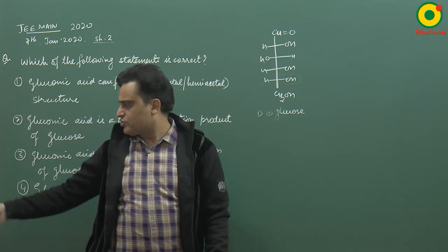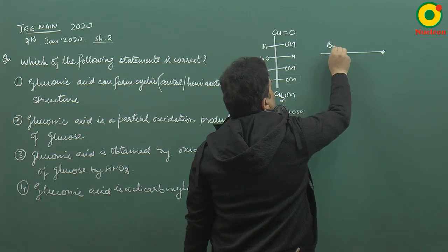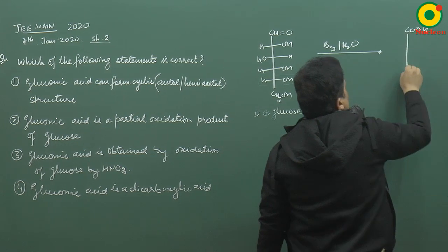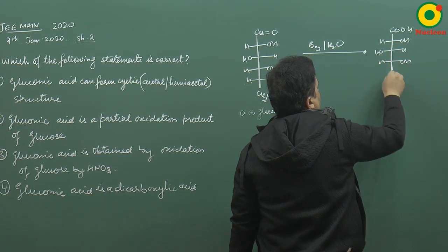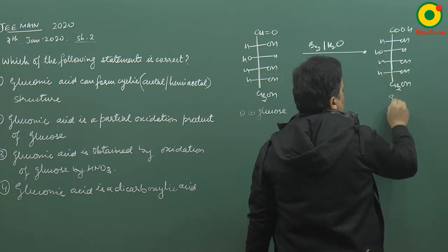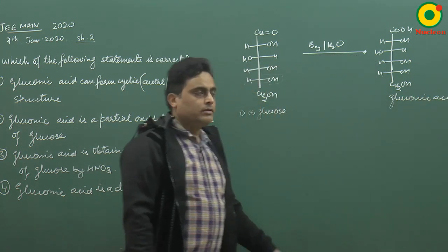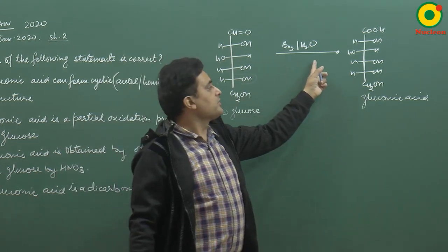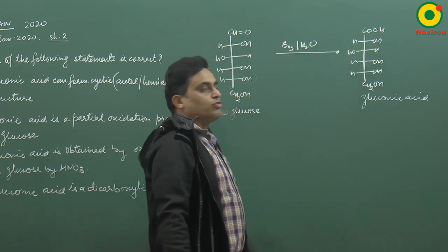If we react glucose with HNO3, the product is known as saccharic acid. If we use the reaction of glucose with bromine water (Br2 water), then this is a partial oxidation where the CHO group is oxidized to COOH, and this product is called gluconic acid.